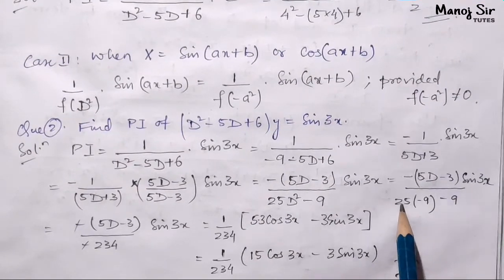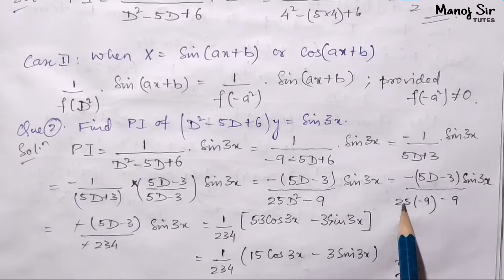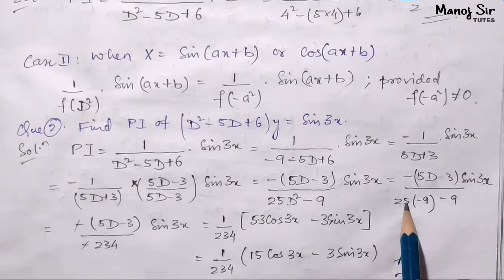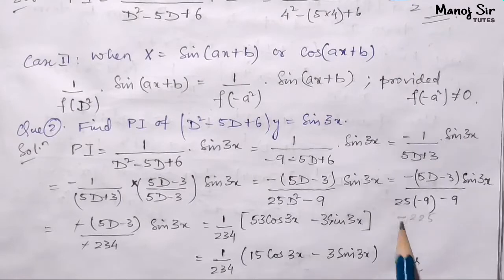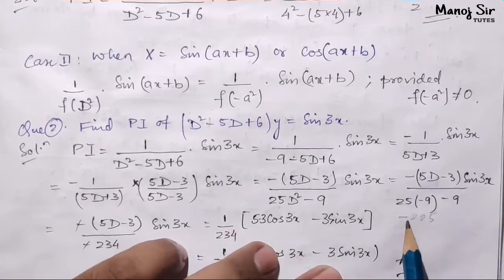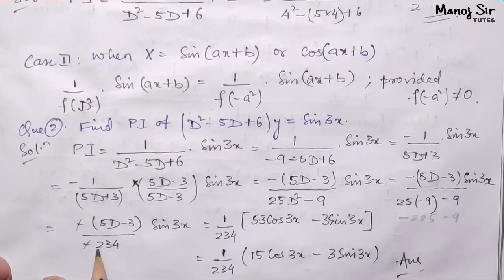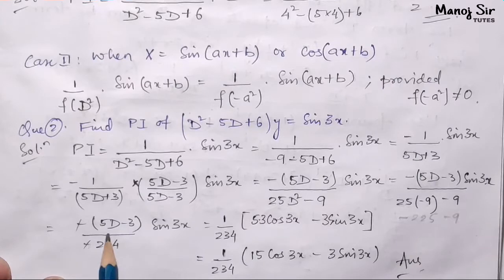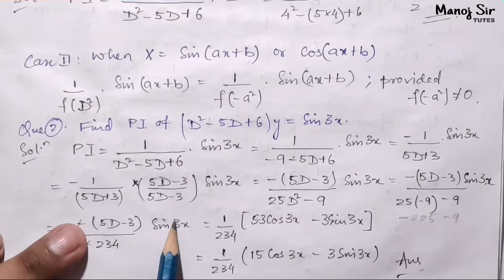25 into 9 gives 225, with a negative sign that is minus 225. Then minus 225 minus 9 gives minus 234. Now you can see the denominator is also negative, so negative times negative cancels, and we are left with 1 upon 234, times 5D minus 3.